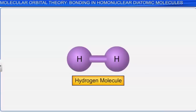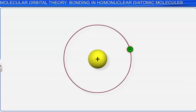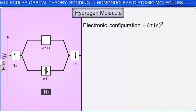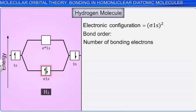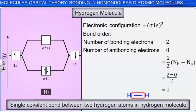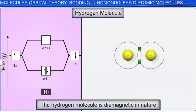Let us start with the hydrogen molecule, which is formed by the combination of two hydrogen atoms. A hydrogen atom has just one electron placed in the 1s orbital. A hydrogen molecule will have two electrons present in the σ1s molecular orbital. The electronic configuration of a hydrogen molecule is σ1s². The bond order is (2 − 0) / 2 = 1, showing a single covalent bond between the two hydrogen atoms. The hydrogen molecule is diamagnetic, as no unpaired electrons are present.